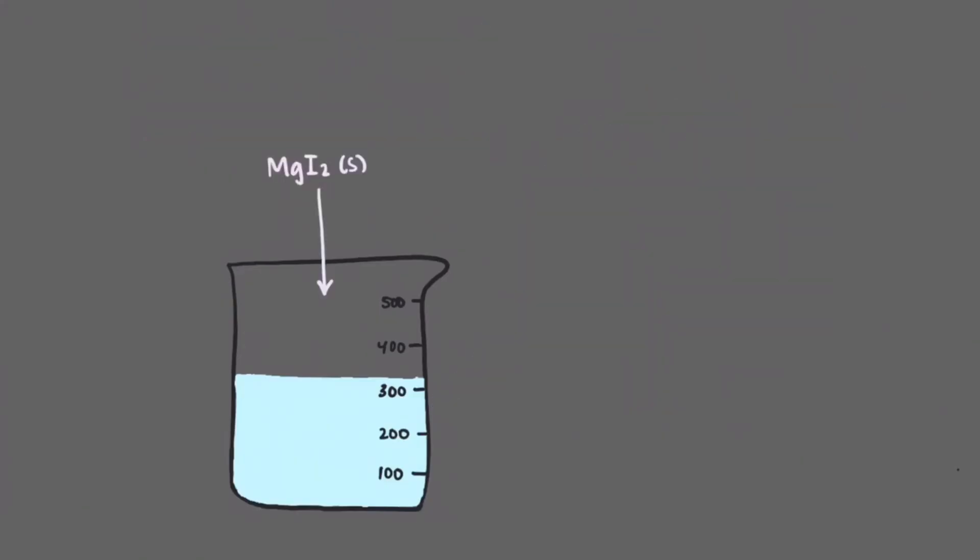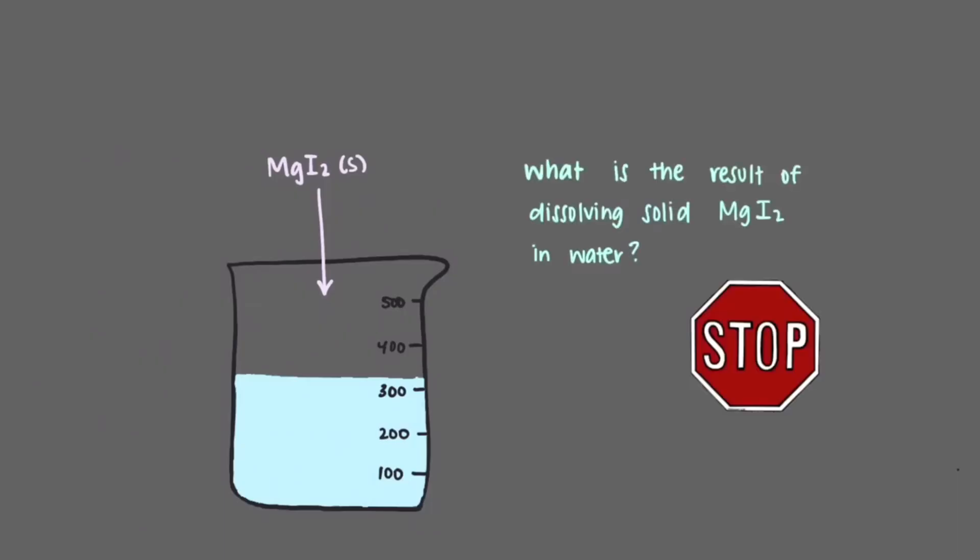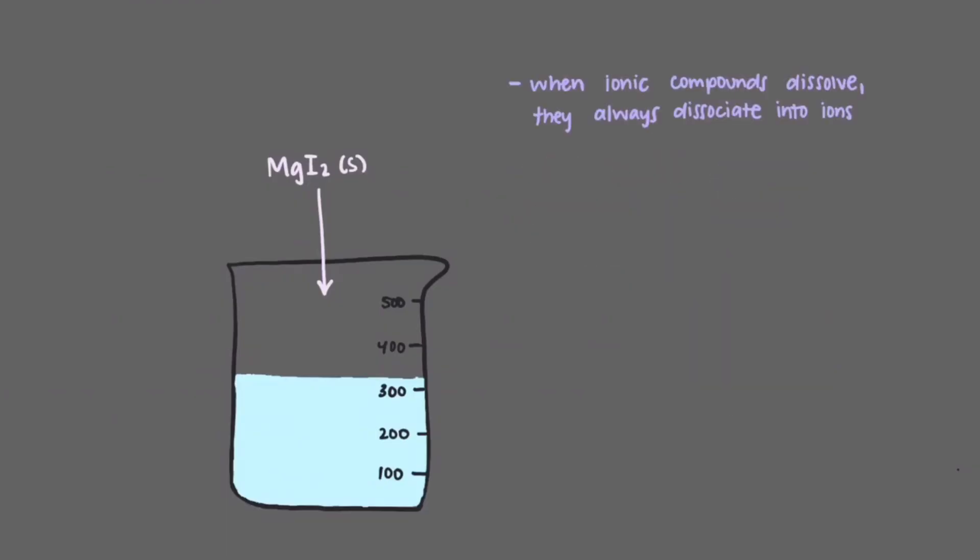Suppose we added solid magnesium iodide to water. What is the result of dissolving solid magnesium iodide in water? As we've said, when ionic compounds dissolve, they always dissociate into ions, each of which is surrounded by waters.